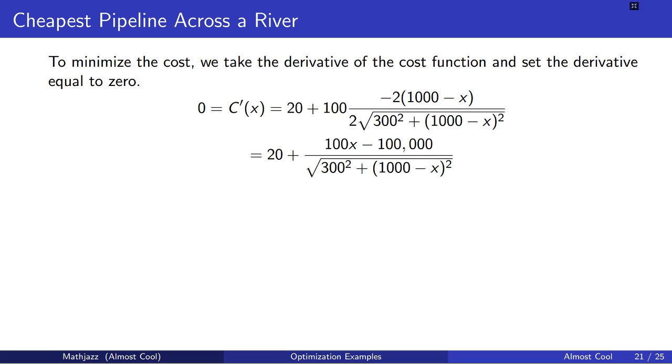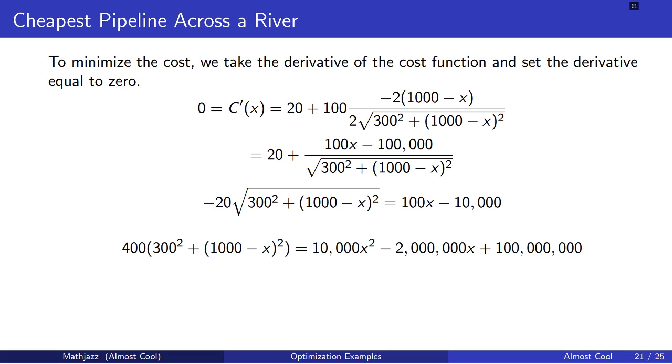To minimize the cost, we take the derivative of this cost function and then we set the derivative equal to zero. We need to solve for x now to figure out what our critical points are.